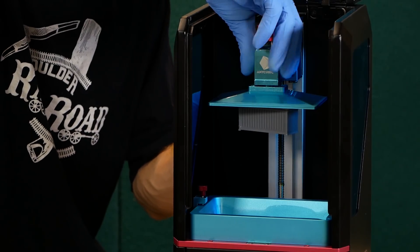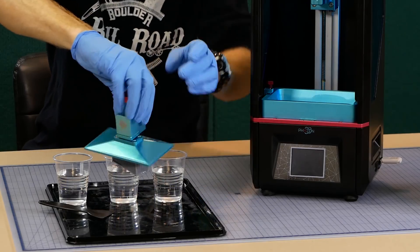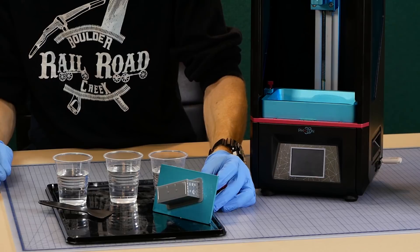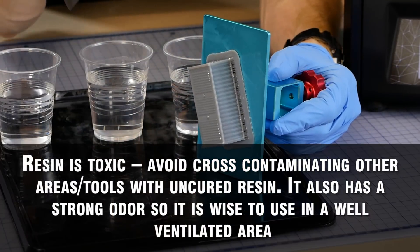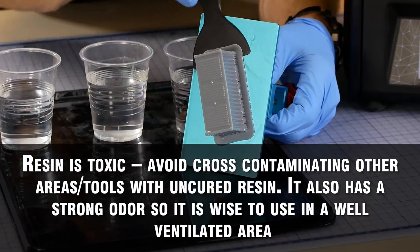Once the model is ready to be removed from the printer we can begin the cleaning process. It's actually a straightforward process and not at all difficult but just be sure to wear some gloves and avoid direct skin contact with uncured resin as it is a toxic substance. If it does get on your skin be sure to wash it off with soapy water.